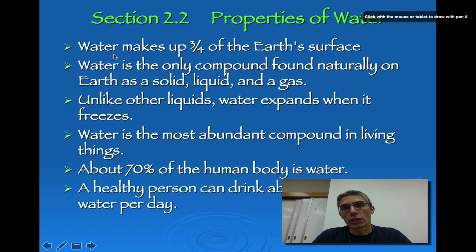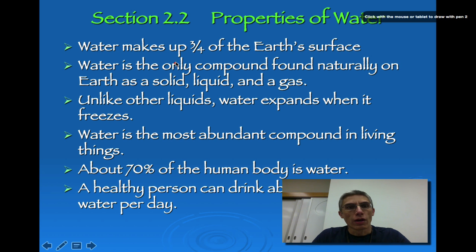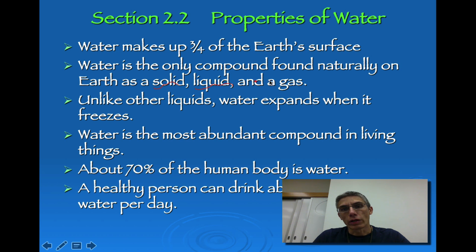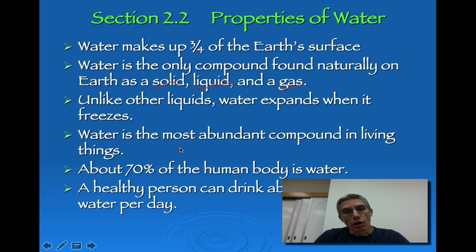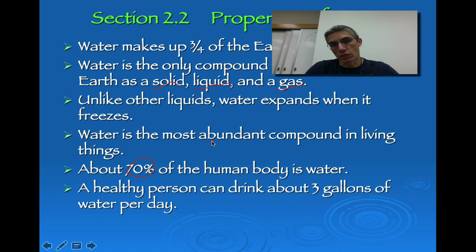In Section 2.2, we need to look at the properties of water, because water is really important when it comes to living things. A few statistics: water makes up about three-fourths of the Earth's surface. It is the only compound found naturally on Earth as either a solid, a liquid, or a gas. Unlike other liquids, water will expand when it freezes. Water is also the most abundant compound in living things — almost any living thing on this planet is around 70% water.